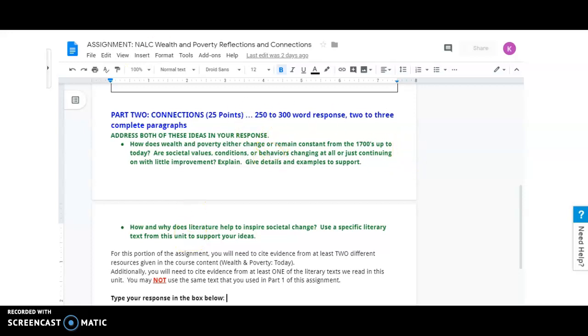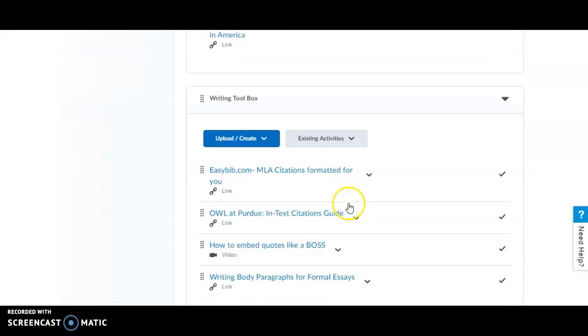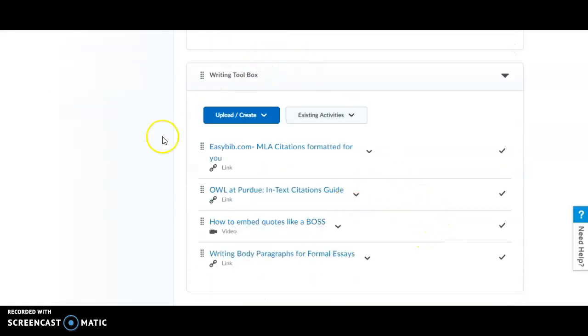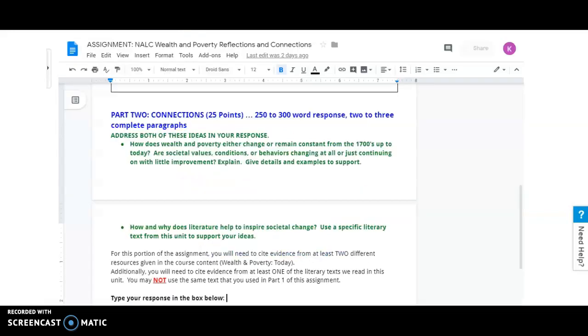Now, if you're wondering, how do I get started? How do I do in-text citations? If you look in this week, you're going to see there's a writing toolbox, which has easybib.com, in-text citations guide from the Owl at Purdue, how to embed quotes like a boss, and writing body paragraphs. So, if you need help developing those paragraphs, there's these resources right here that will help you.